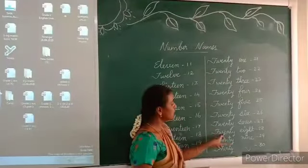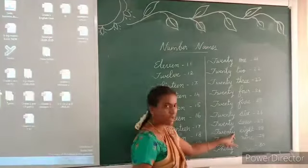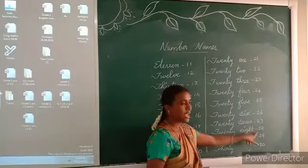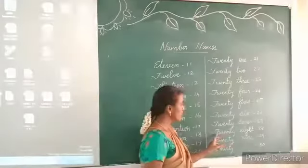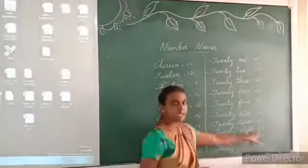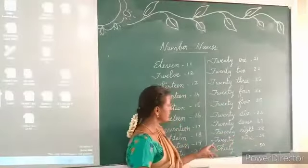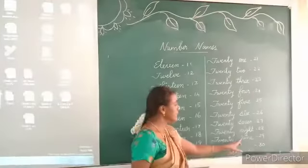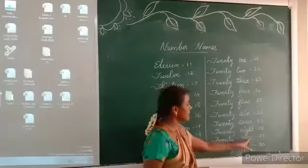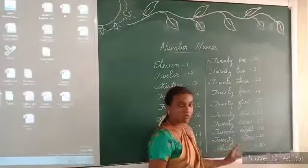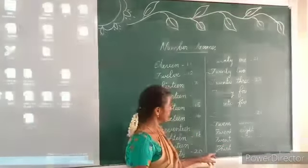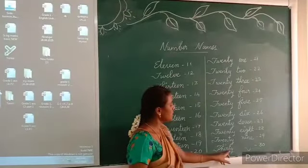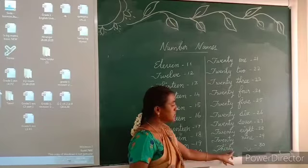Twenty-eight — E-I-G-H-T — 28. Twenty-nine — N-I-N-E — 29. Thirty — T-H-I-R-T-Y — 30.